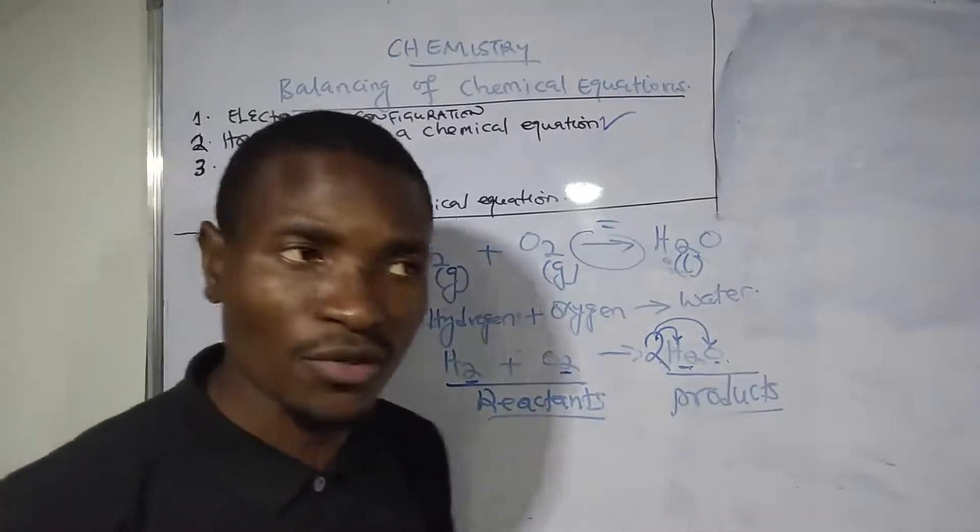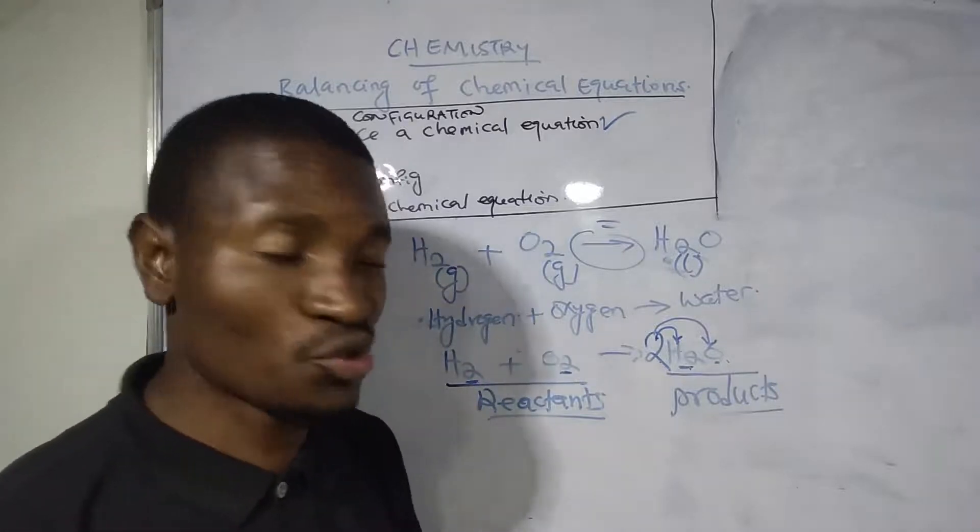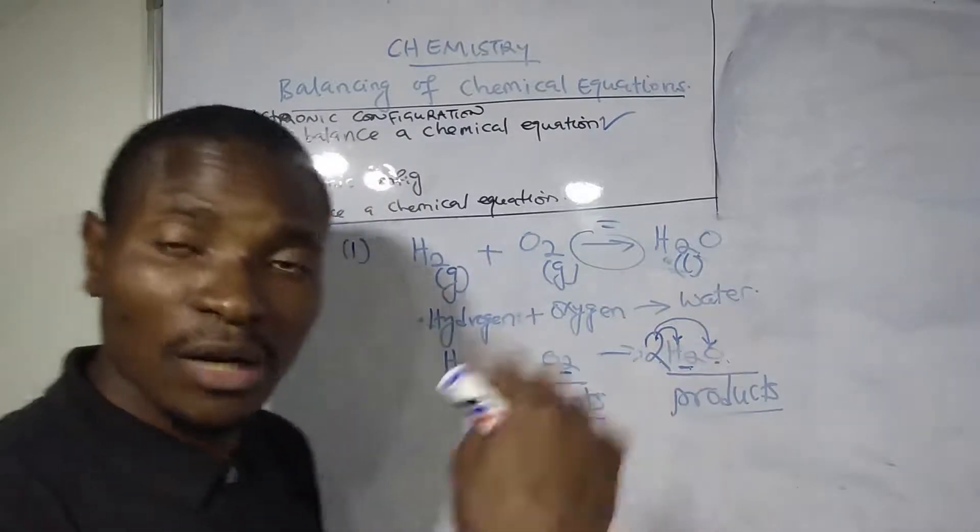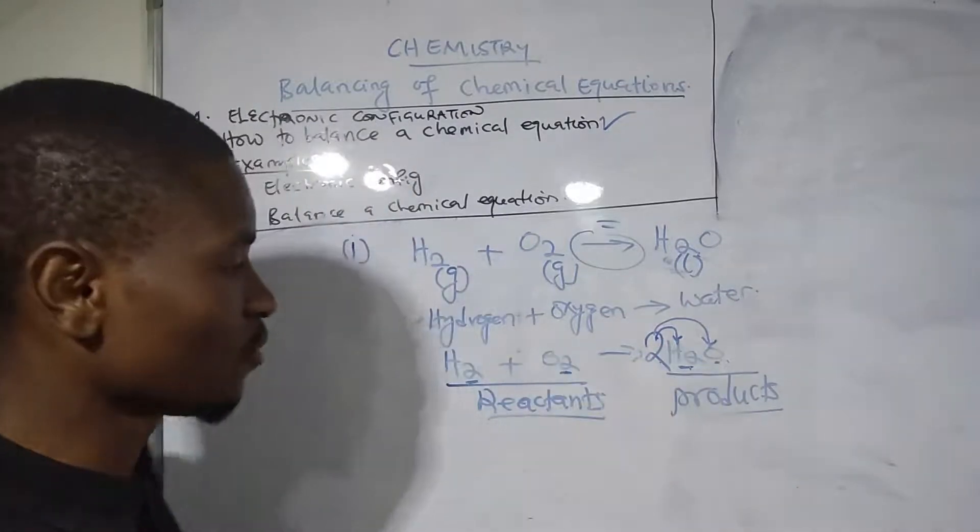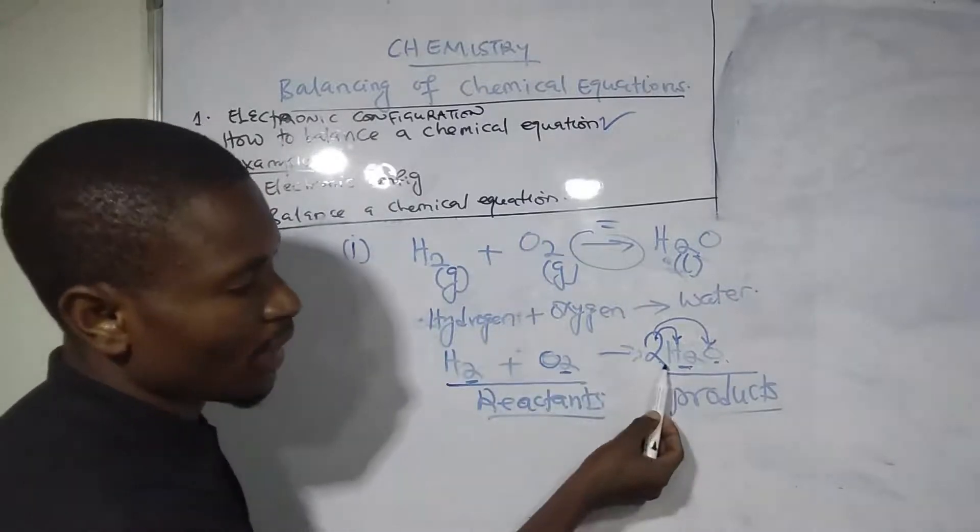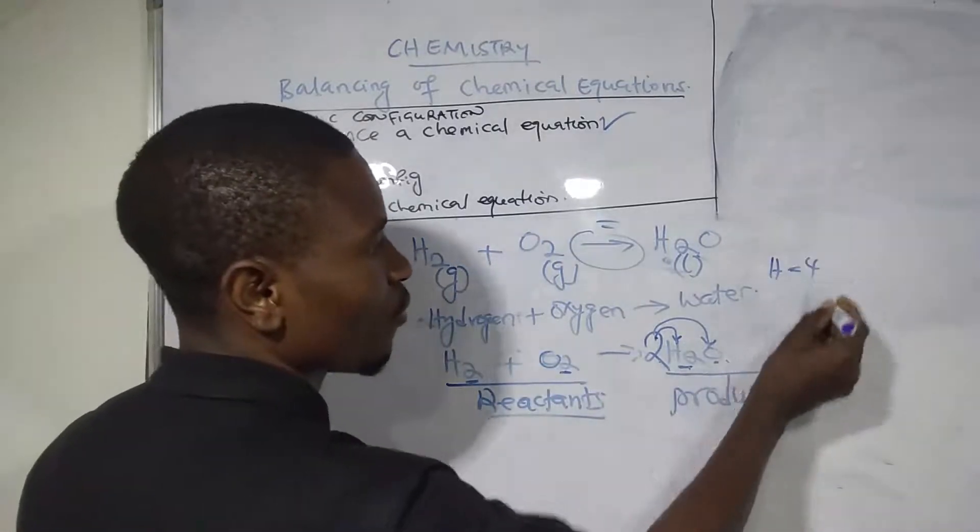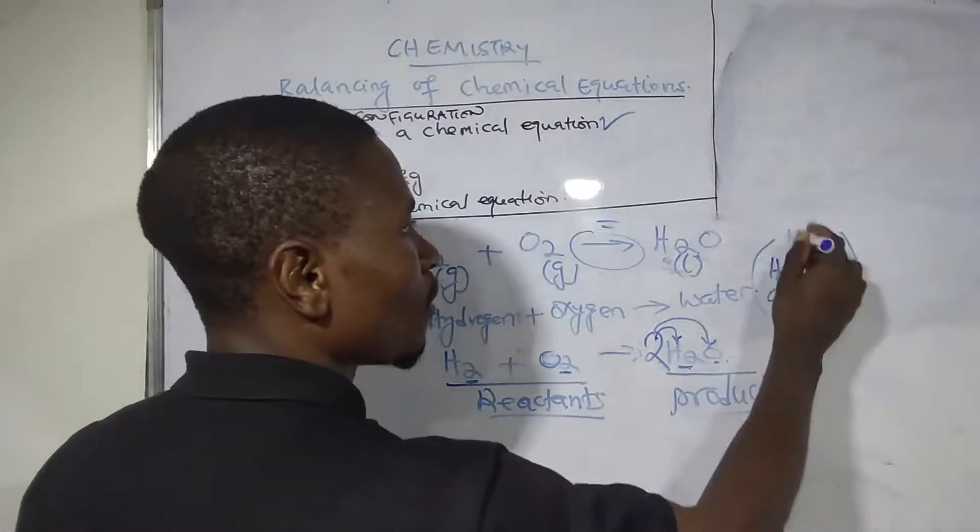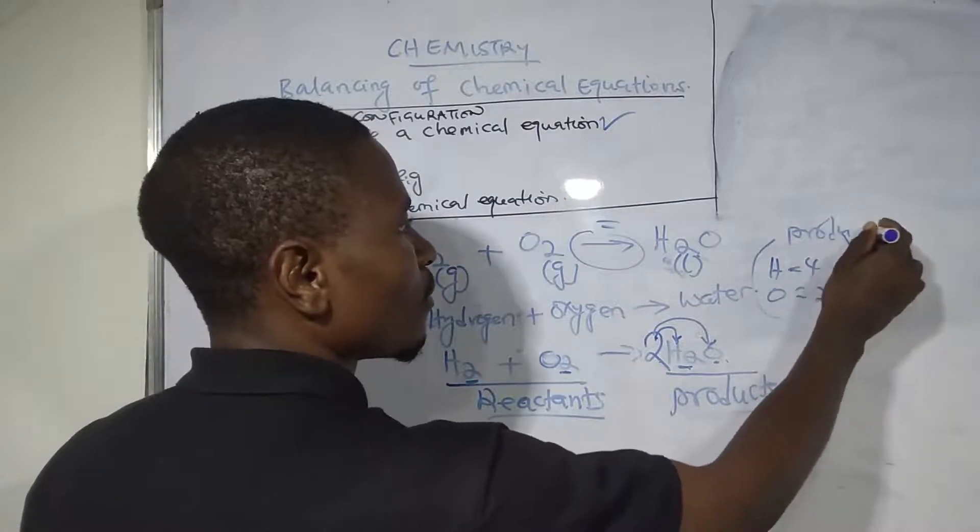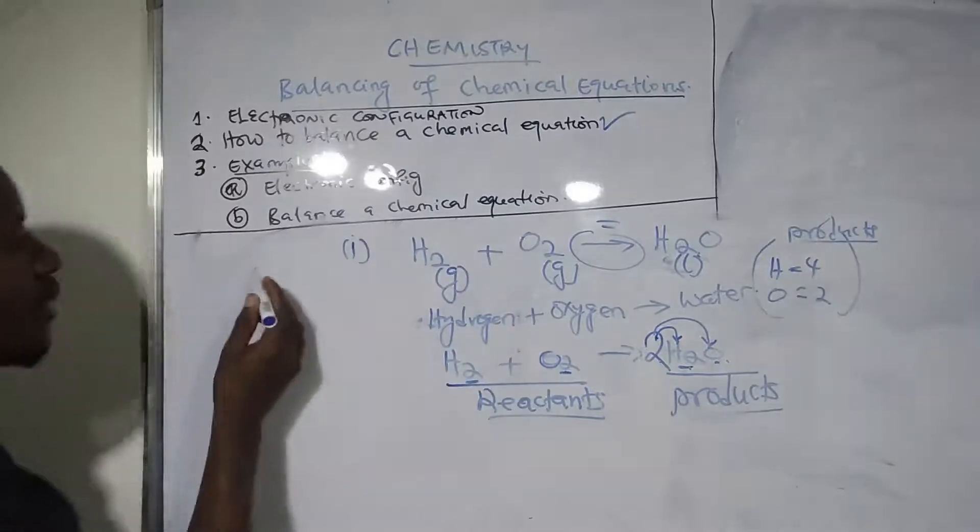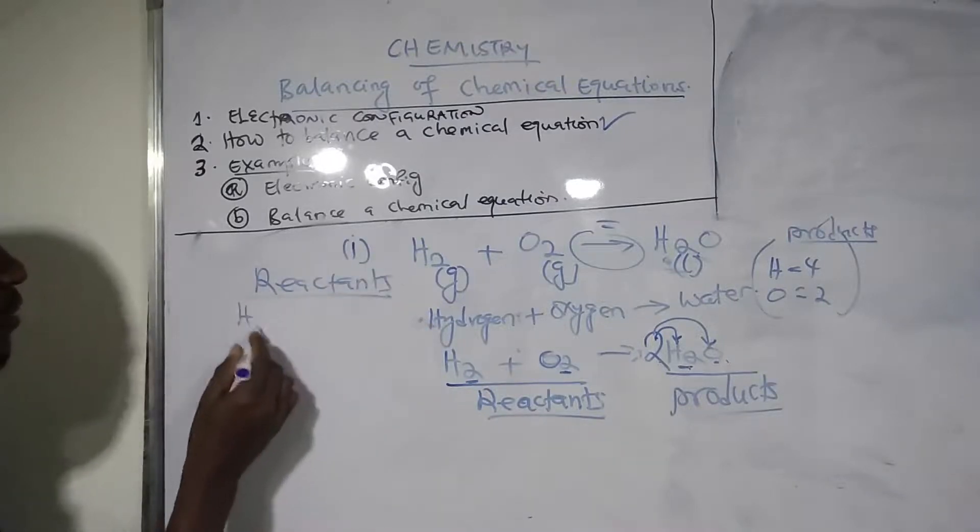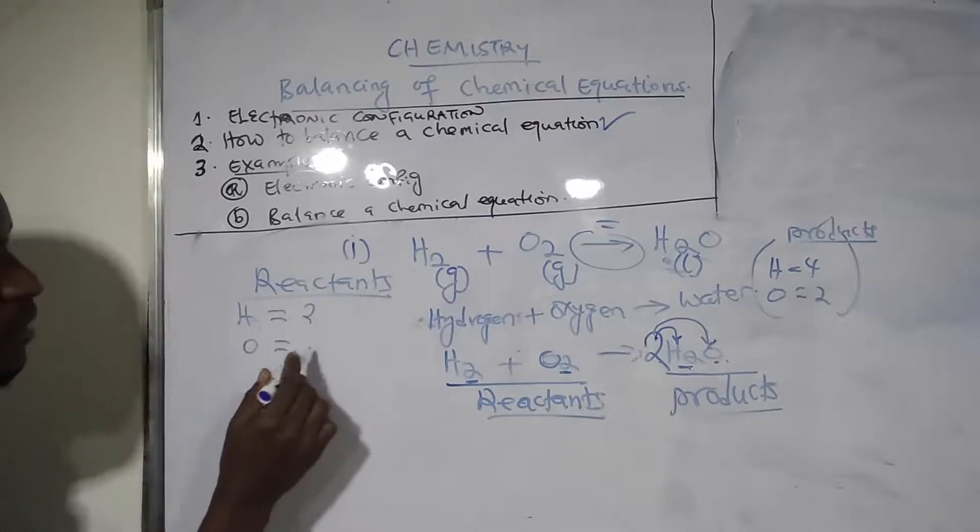To find the total number of atoms for hydrogen, you say 2 times 2, you get 4. For oxygen, 2 times 1, you get 2. We've successfully changed oxygen from 1 to 2. But we shouldn't end there - we have to counter-check that we've balanced everything. On the products, hydrogen has 4 and oxygen has 2.